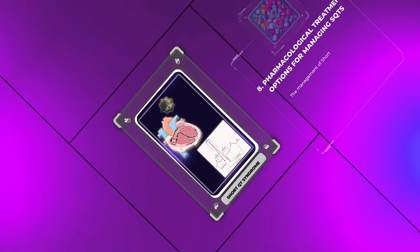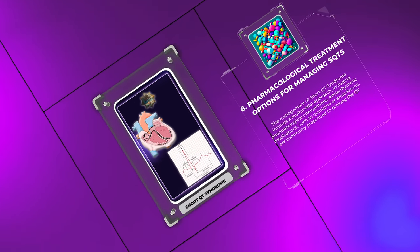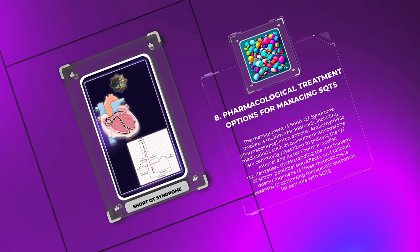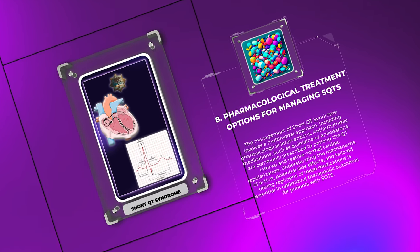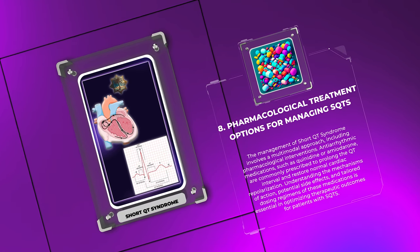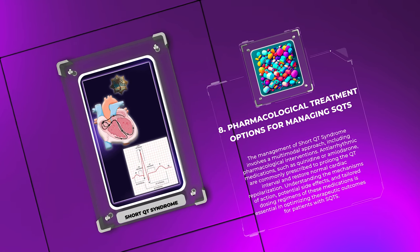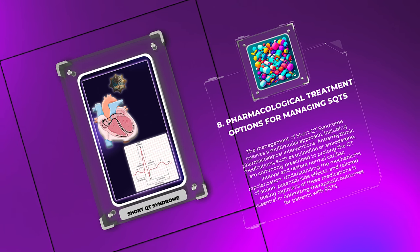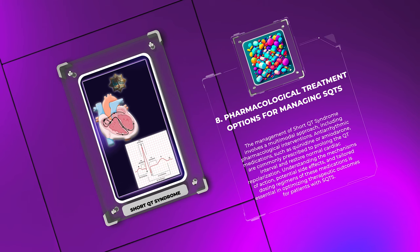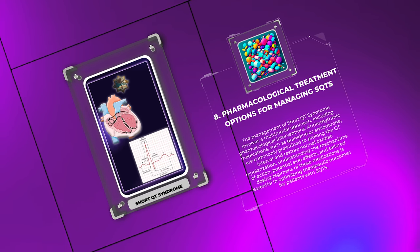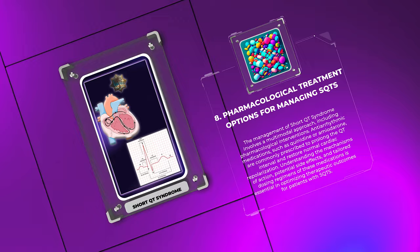The management of Short QT Syndrome involves a multimodal approach, including pharmacological interventions. Antiarrhythmic medications such as quinidine or amiodarone are commonly prescribed to prolong the QT interval and restore normal cardiac repolarization. Understanding the mechanisms of action, potential side effects, and tailored dosing regimens of these medications is essential in optimizing therapeutic outcomes for patients with SQTS.